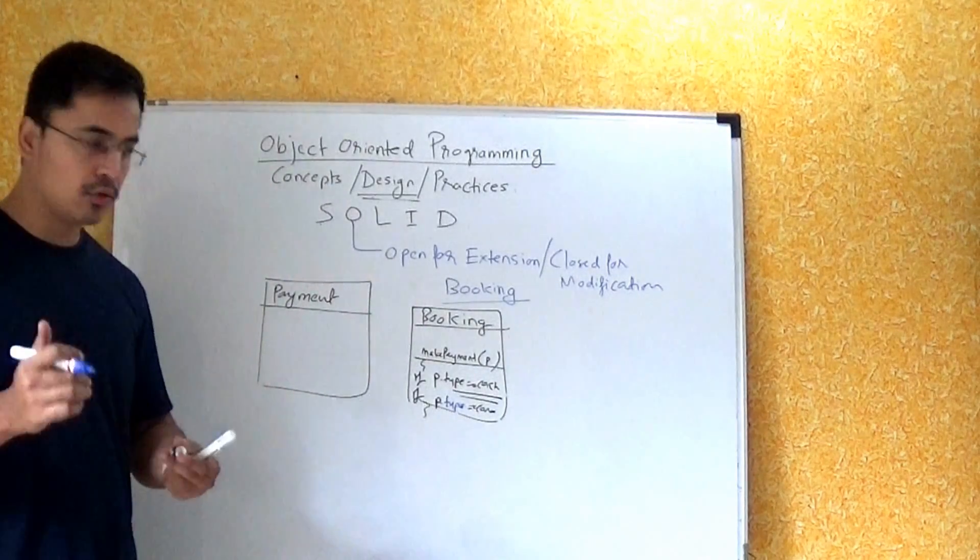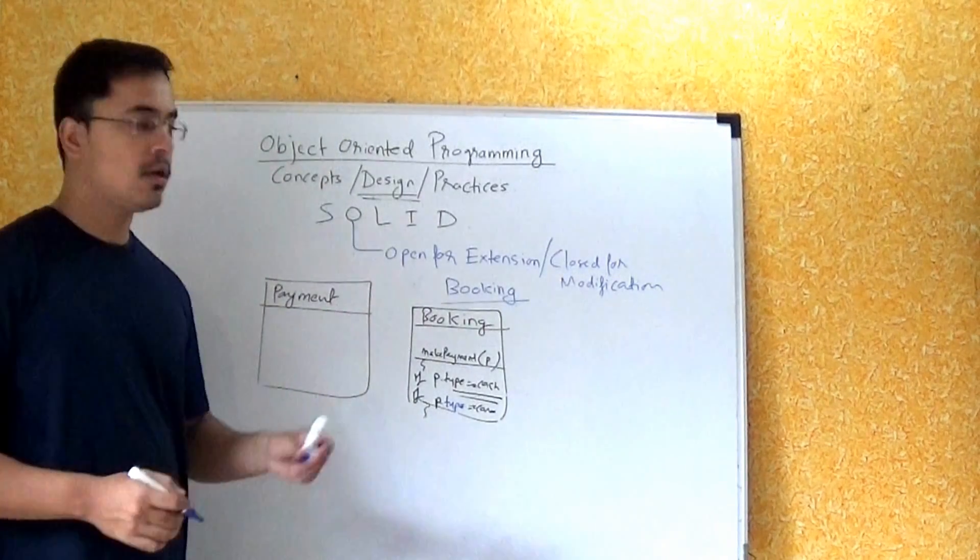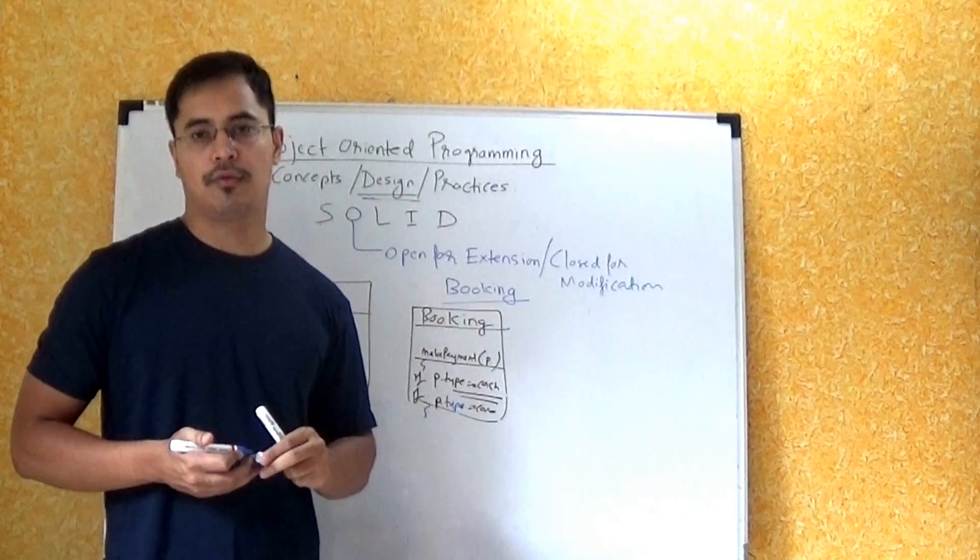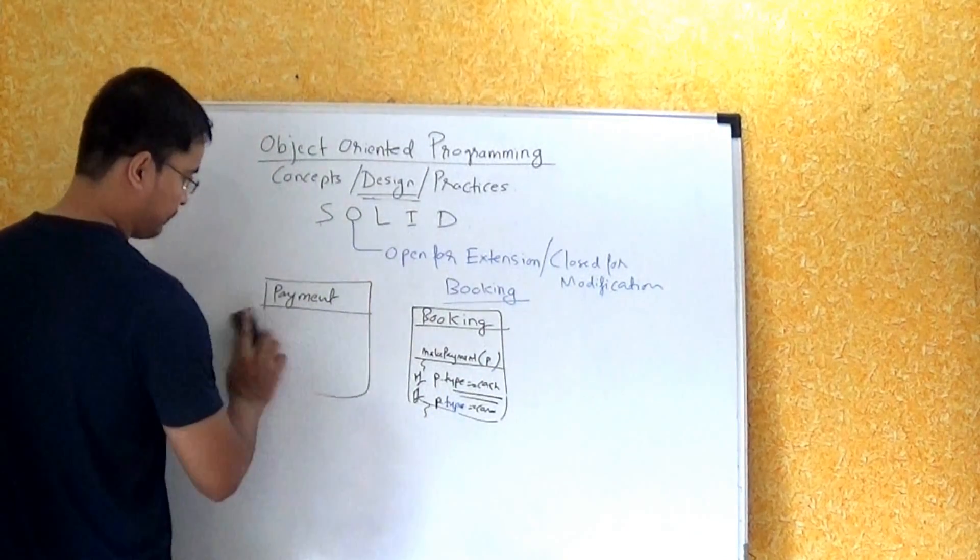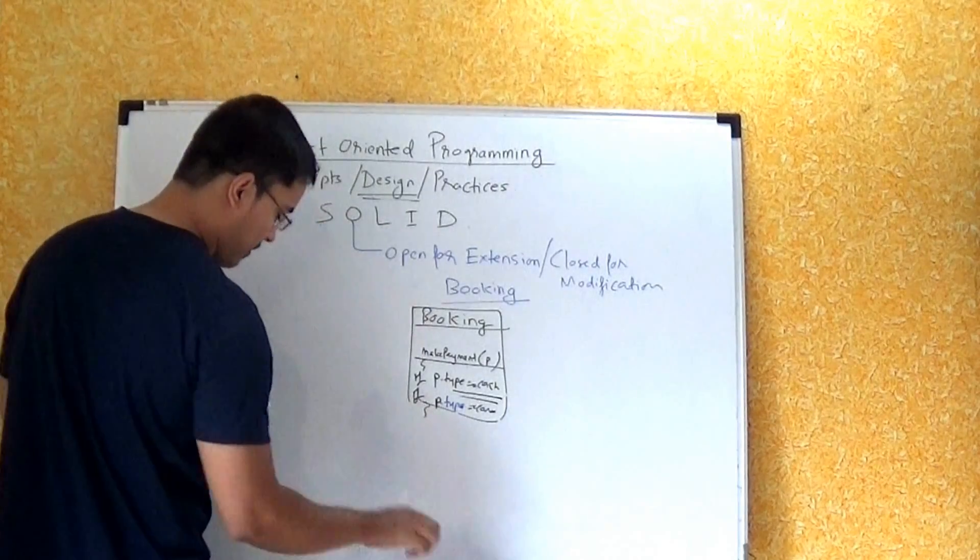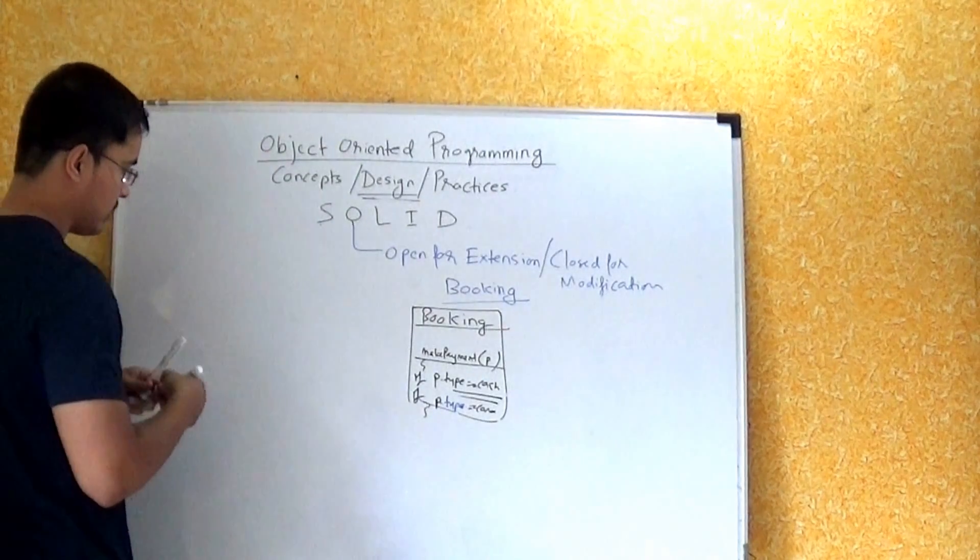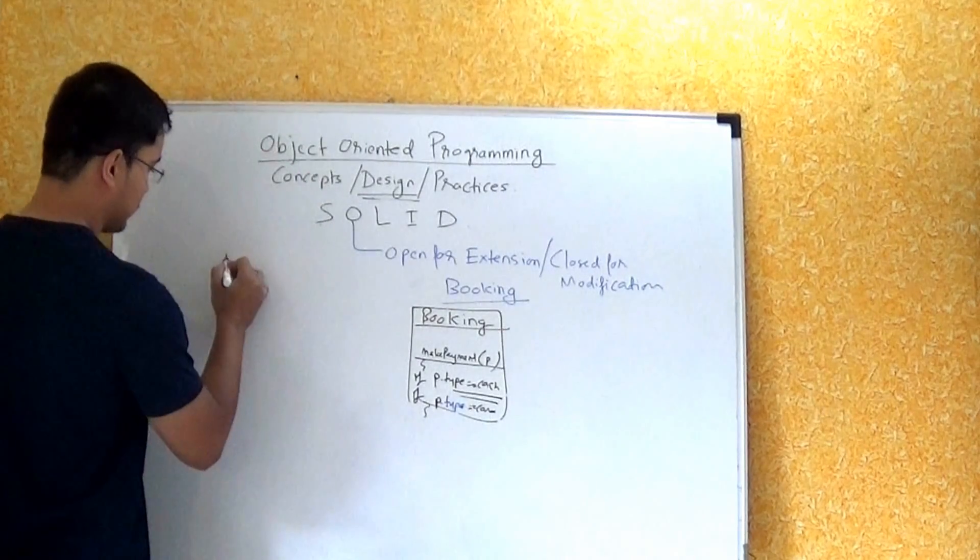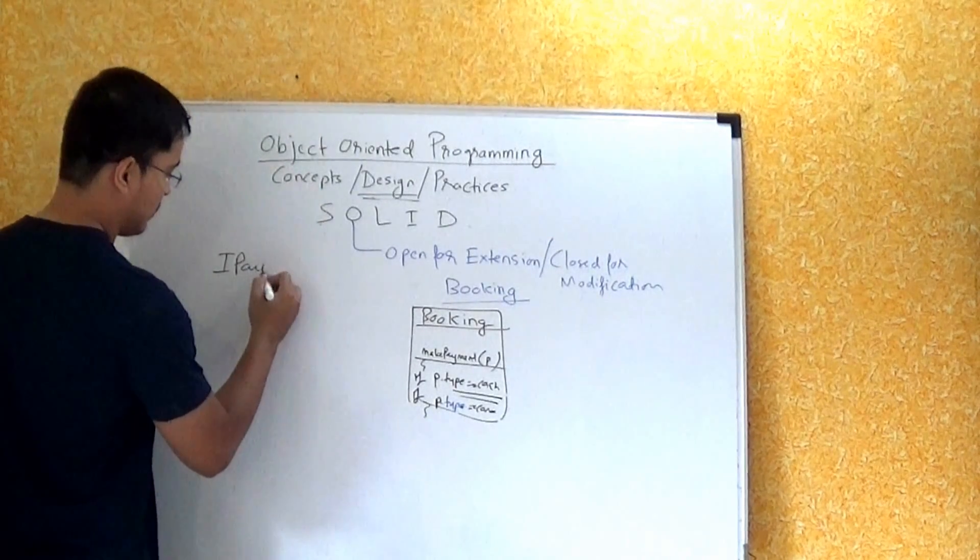So the best way to do this is follow open for extension and closed for modification. That is, instead of creating a concrete payment class, you create an interface called IPayment.